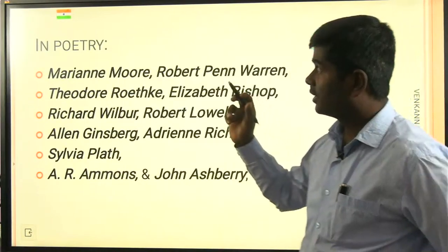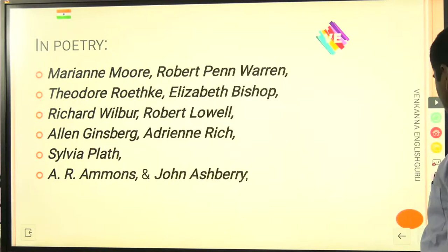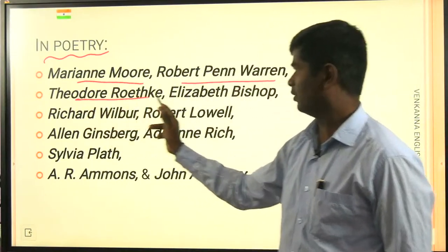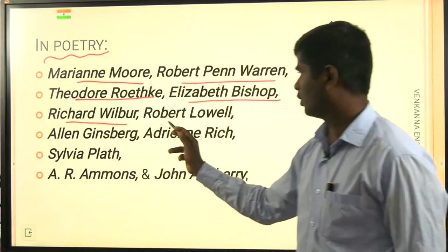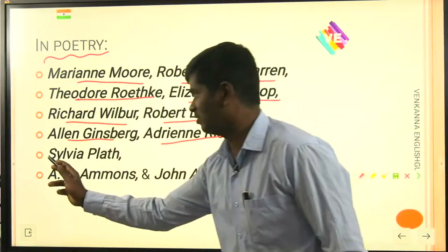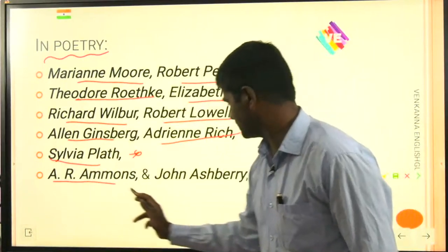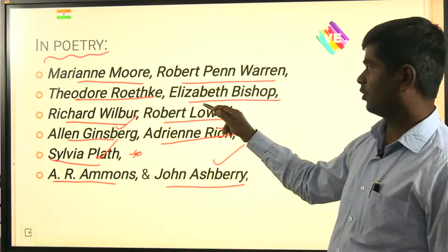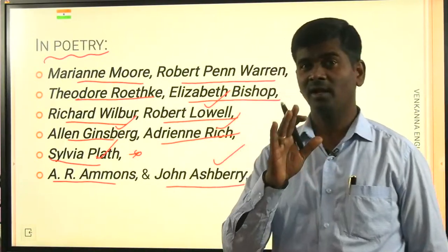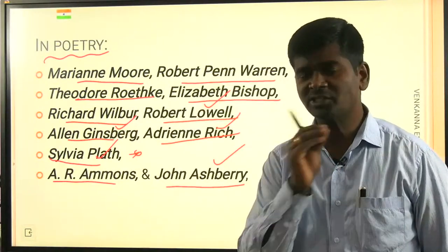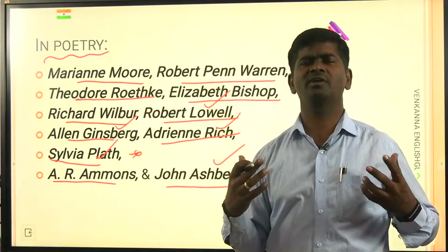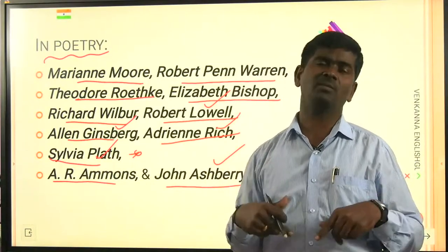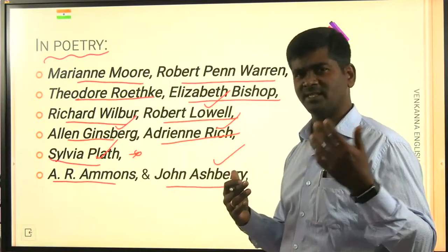In poetry, the popular poets during this period were Marianne Moore, Robert Penn Warren, Theodore Roethke, Elizabeth Bishop, Richard Wilbur, Robert Lowell, Allen Ginsberg, Adrienne Rich, and Sylvia Plath. Also A.R. Ammons and John Ashbery. These writers were considered poets of exclusion — confessional poets — because they wrote about things that are not normally spoken. The popular writer of confessional poetry was Emily Dickinson.